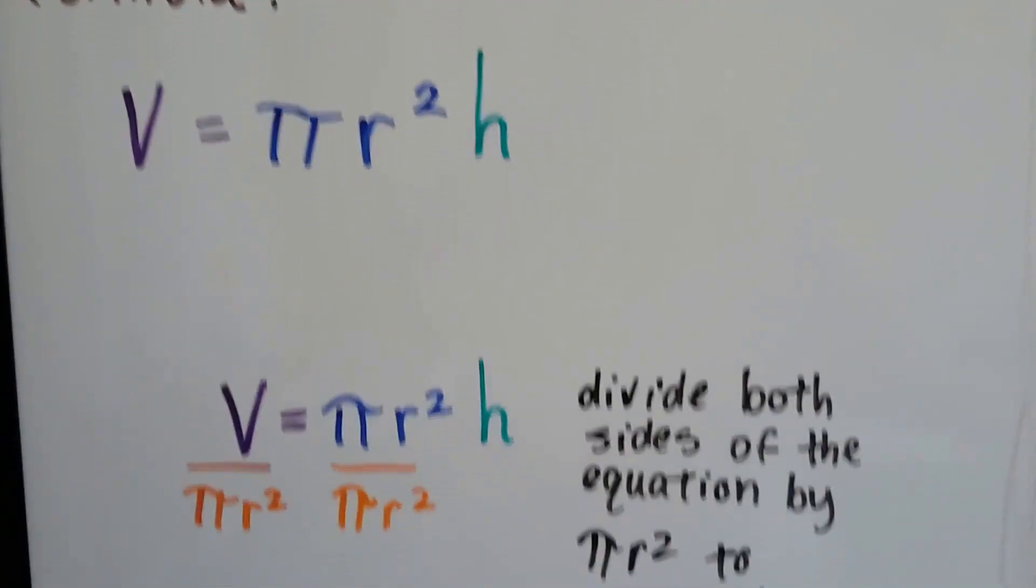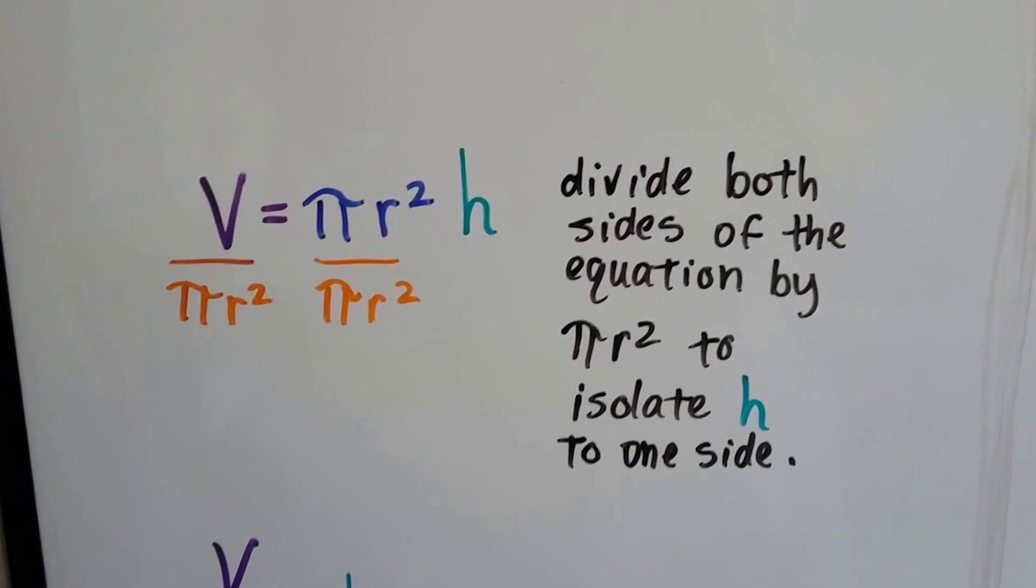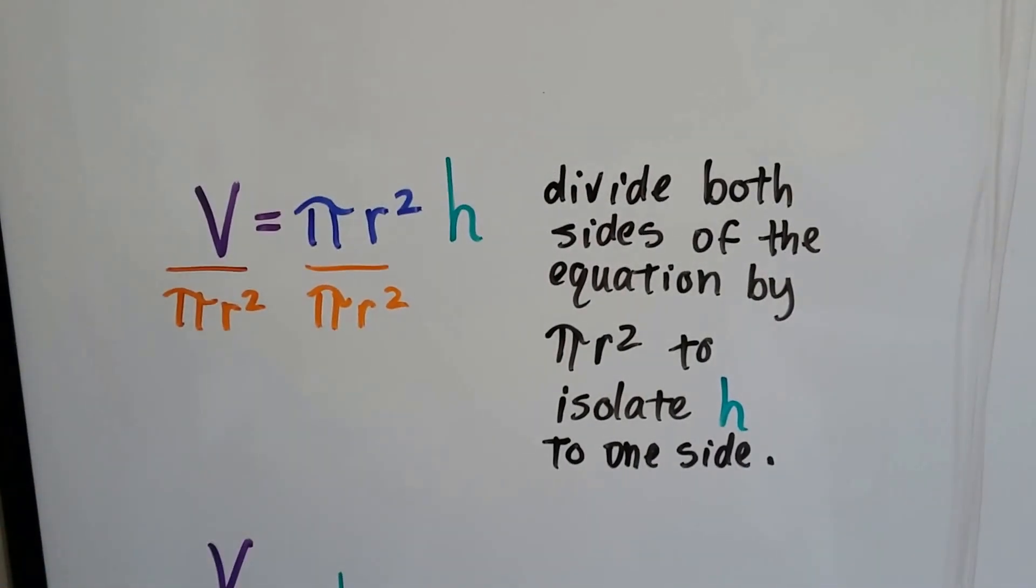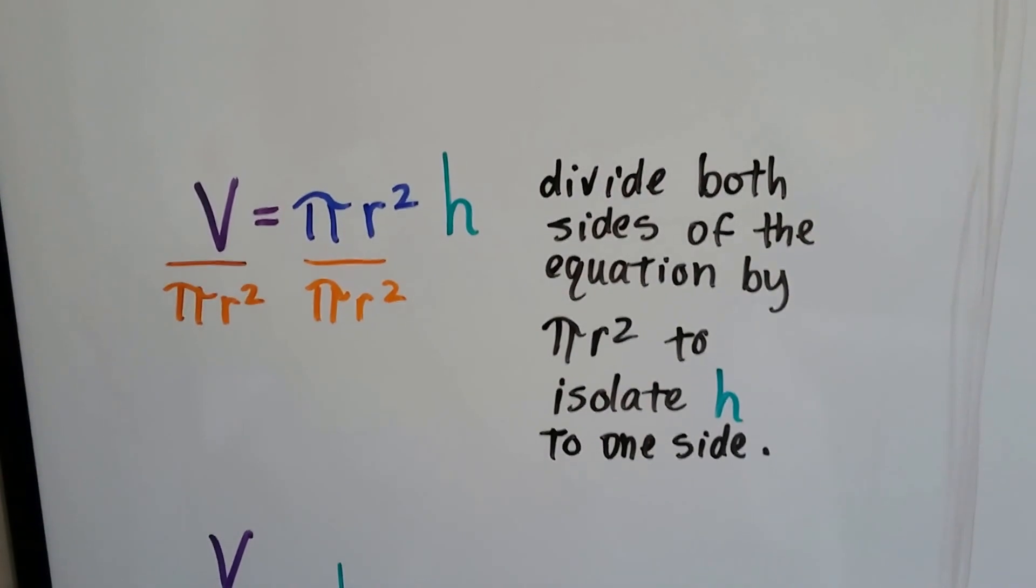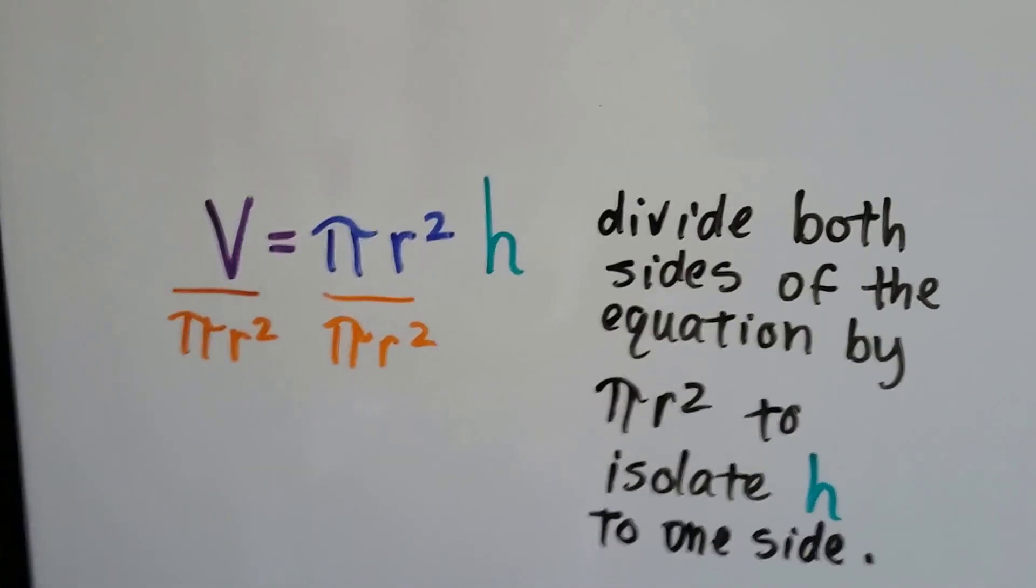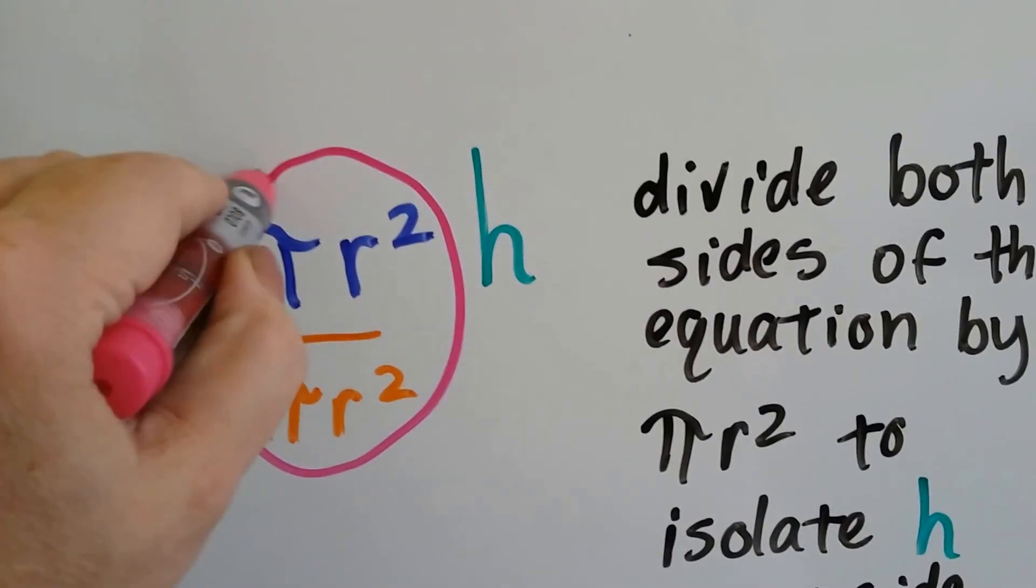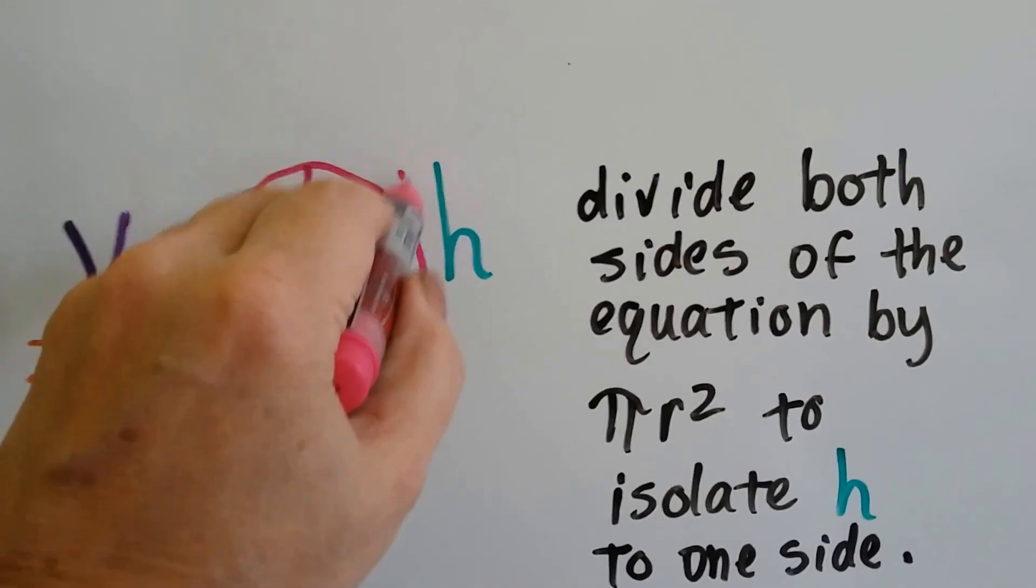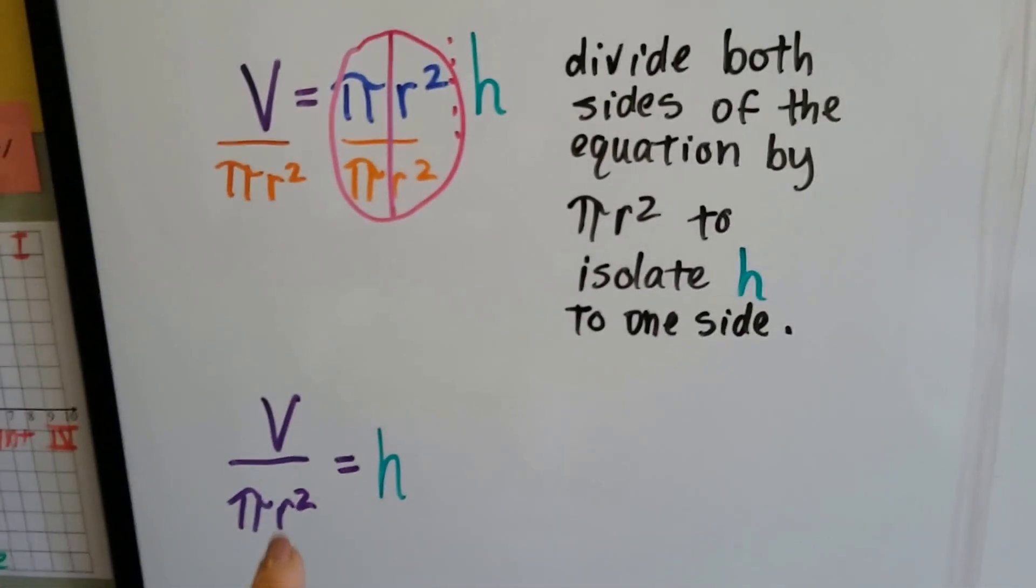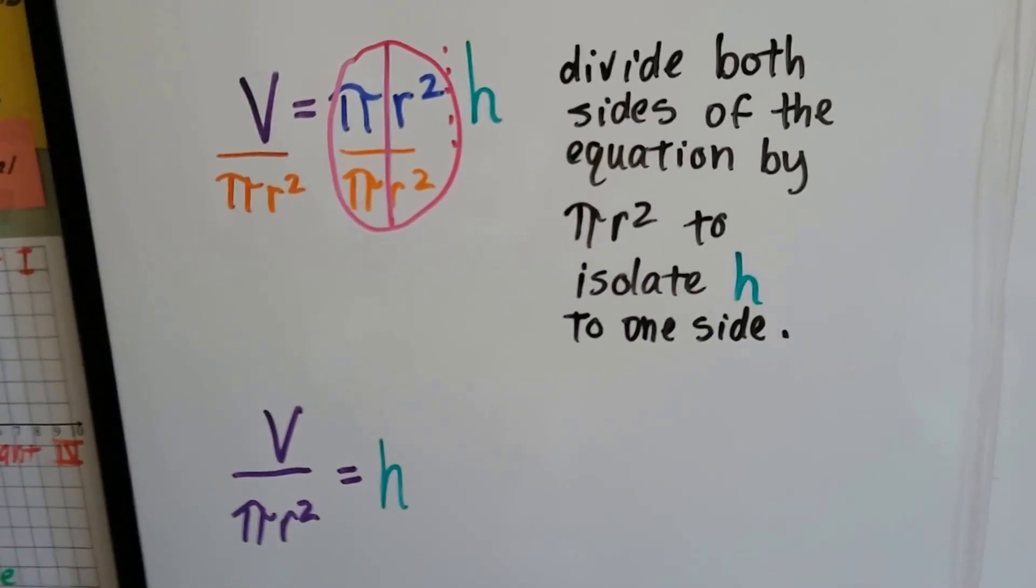We've talked about that in the last couple of videos. All we have to do to switch the formula around is divide both sides by π r squared to get the h isolated to one side. Because we've divided both sides by that π r squared, do you know what happens to this part? We've made our friend the invisible one. So now we've got one h on this side, and our formula is now volume divided by π r squared equals the height.